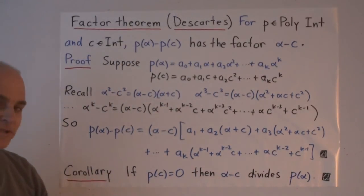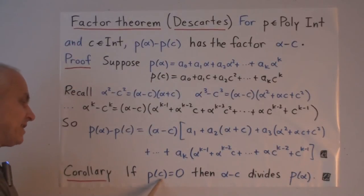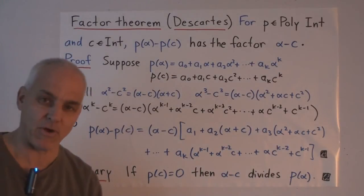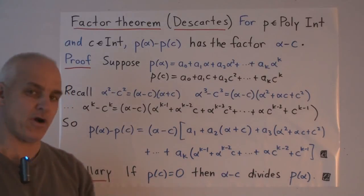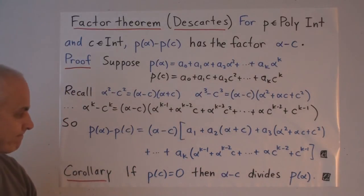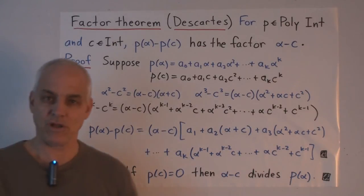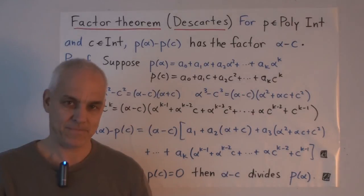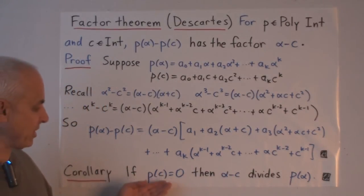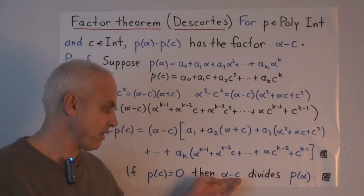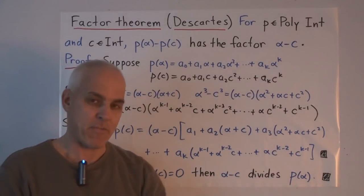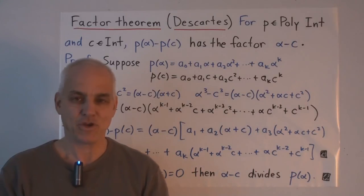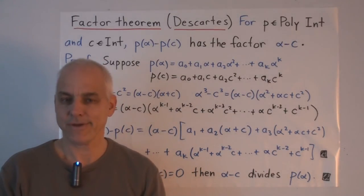And a very important special case. Now, if P of C happens to be equal to zero, in other words, if C is a zero of the poly number P, well then this term is zero. So then alpha minus C divides P of alpha, the original poly number P. So this is a very important connection between the zeros of a poly number and linear factors of the poly number. It's going to be a major theme for us.